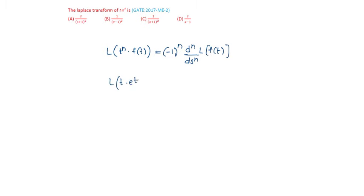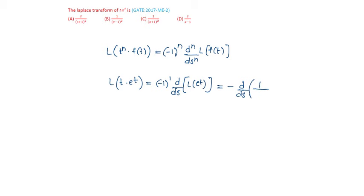So the Laplace transform of t into e power t will be equal to minus 1 whole power 1, d by ds of the Laplace transform of e power t, which equals minus d by ds of 1 by s minus 1, which is equal to minus of s minus 1 to the power of minus 1.